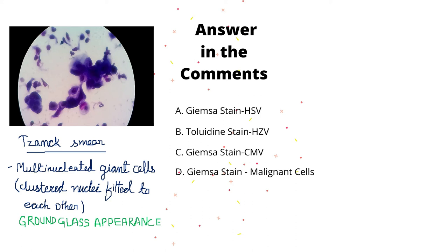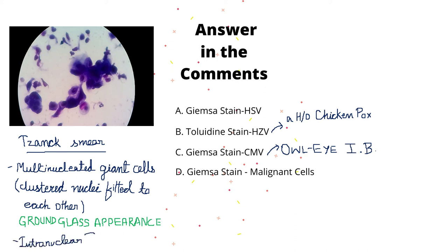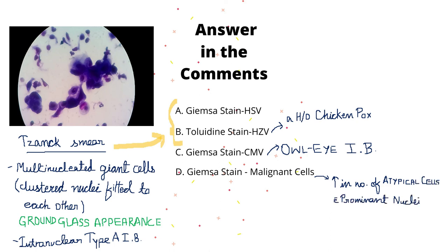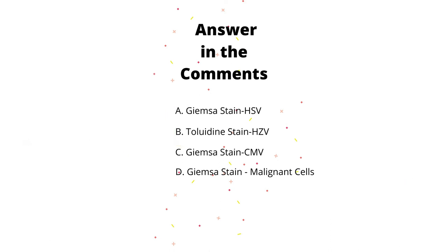If a person is infected with Herpes Zoster virus, there will be a history of chickenpox — Herpes Zoster is a reactivation of the latent virus when immunity falls, while chickenpox follows a primary infection. In Cytomegalovirus, there will be typical owl-eyed inclusion bodies, while in Herpes Simplex there will be intranuclear type A inclusion bodies. In option D, in malignant cells, we can see increased mitotic activity of typical and atypical cells. So the correct answer is option A: Giemsa staining, Herpes Simplex Virus.